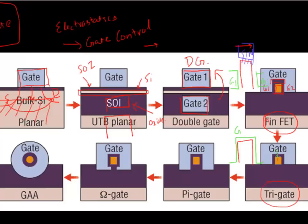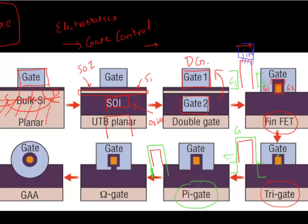In a Trigate device you use the top surface as well, whereas in a FinFET device you essentially only use your side walls. Having the gate on three sides further improves electrostatic control. You can go one step further by having the gate protrude a little bit below your fin — essentially wrapping it around in a pi shape. That's your pi-gate device. You can go even further with an omega-shape device, and the ultimate electrostatic control is if you have your gate wrapping all around — that's your gate all around device.